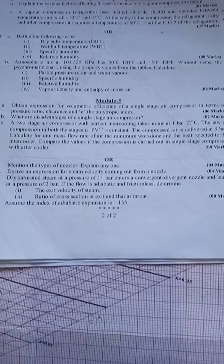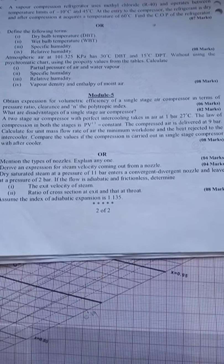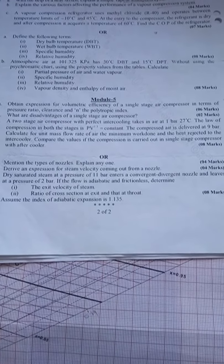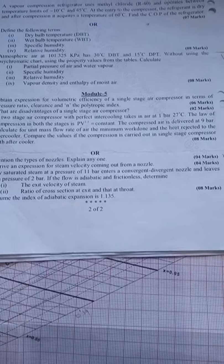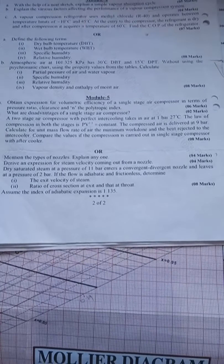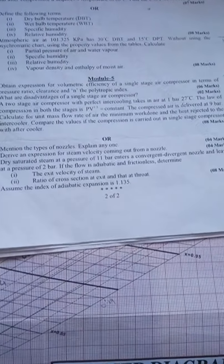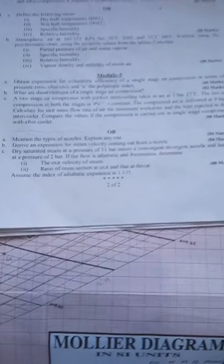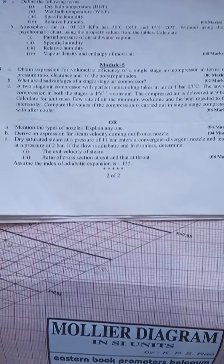Types are three types: convergent, second one is divergent, third one is convergent divergent. Explain any one he has asked. Second one, derive expression for steam velocity coming out of the nozzle. So derivation for steam velocity coming out of the nozzle, you know the formula. That is V2 is equal to 44.72 root delta H. This one you need to derive.